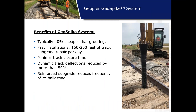To summarize the GeoSpike system: GeoSpike solutions are typically 40 percent cheaper than traditional grouting approaches. Installations can be quite fast — 150 to 200 feet of track can be repaired per day, subject to train frequency. It requires minimal track closure time and minimal disruption. Track deflections can be reduced by up to 50 to 60 percent, and reinforcing the subgrade below ballast and sub-ballast will reduce the frequency of re-ballasting — important since ballast is a finite resource.